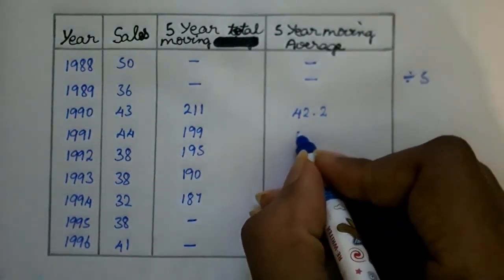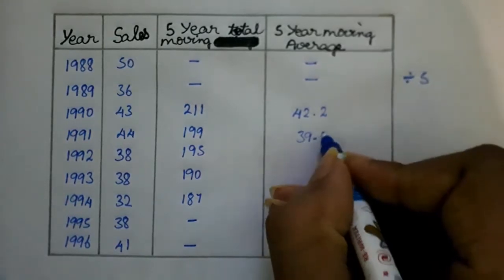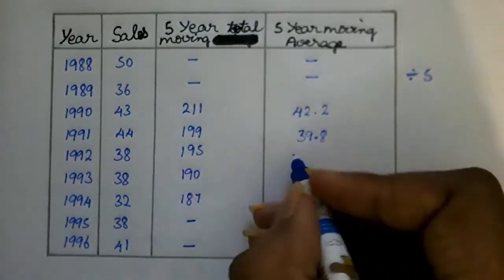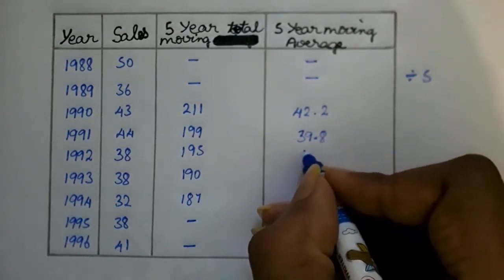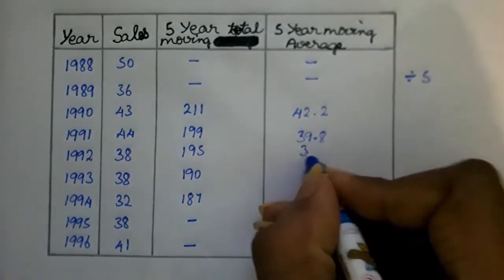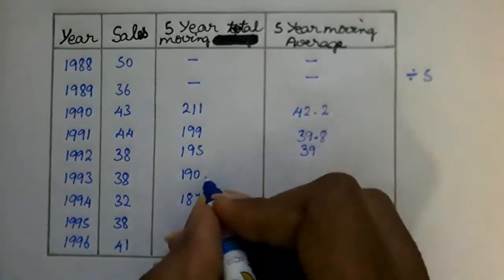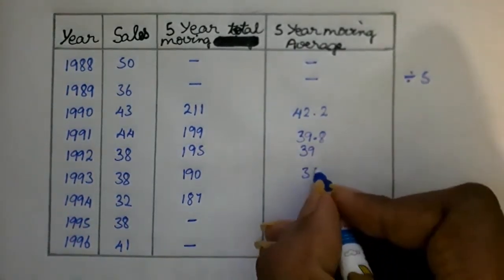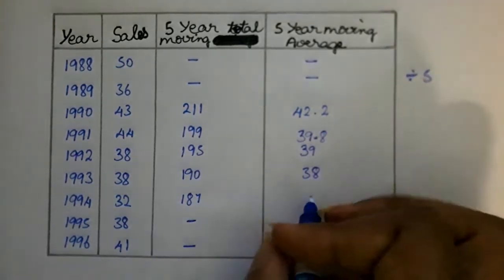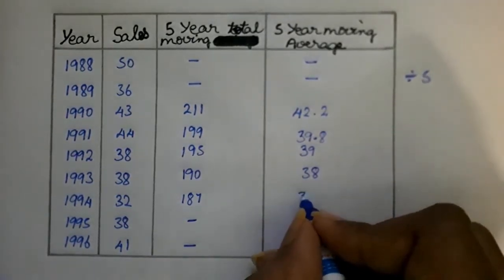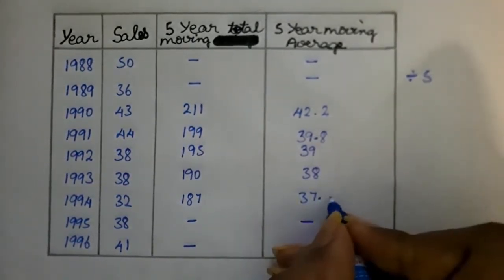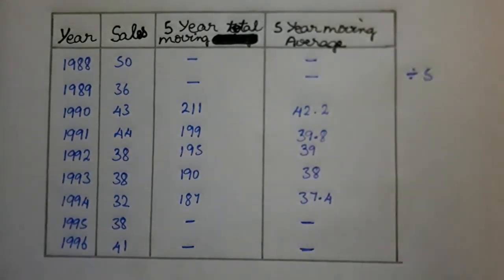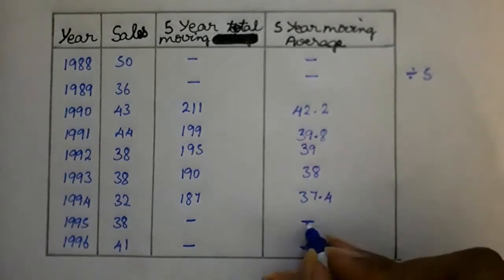Next, 195 divided by 5 gives 39.0. Then 190 divided by 5 gives 38.0. And 187 divided by 5 gives 37.4. This completes the 5-year moving average method.